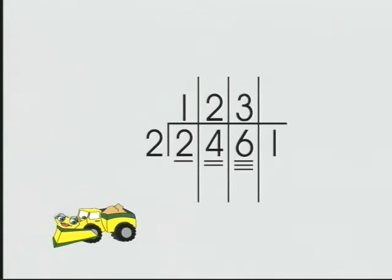There are three groups of 2 in the tens column. There are no groups of 2 in the ones column, so there's one left over. Zero twos, remainder 1. The quotient is 1,230 remainder 1.